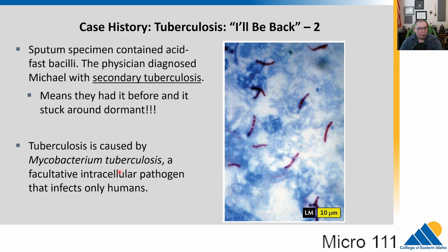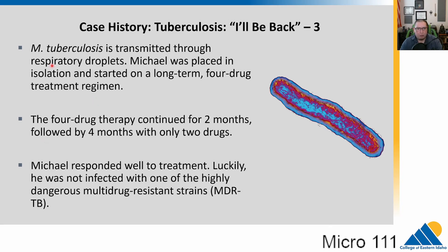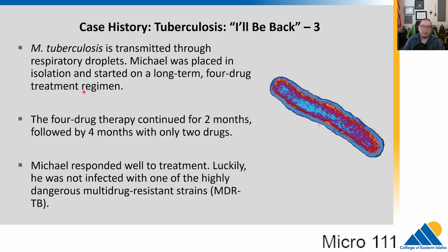Tuberculosis is caused by Mycobacterium tuberculosis. It is an intracellular pathogen that only infects humans and is transmitted through respiratory droplets, so Michael is placed in isolation. He is started on a long-term mix of four different antibiotics for two months, followed by four more months on just two of the drugs. This is a very long-term treatment because the cell wall of Mycobacterium is very resistant to drugs. Luckily, he responds well and is not infected with a dangerous multi-drug-resistant TB strain, which is becoming more and more common.